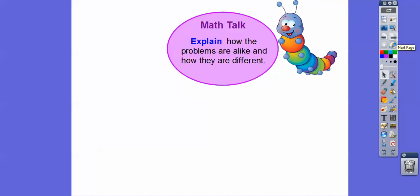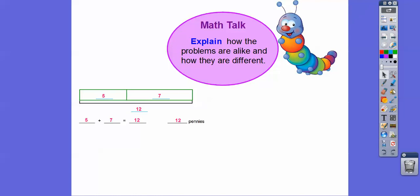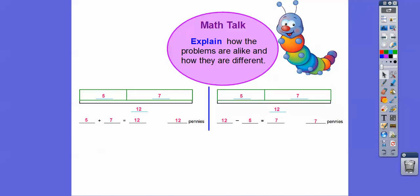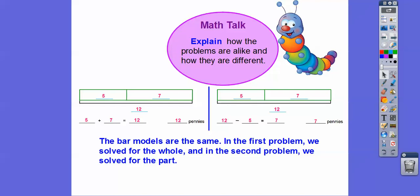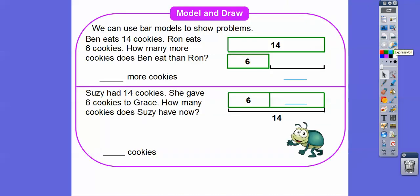So explain how the problems are alike and how they're different. The first one gave us two parts — five and seven — and we added them together to get twelve. This one gave us the twelve, and we didn't know the seven, so we did twelve minus five to get seven. The bar models are the exact same — same parts and wholes. In the first problem we solved for the whole, and in the second we solved for the part. Both have parts five and seven adding to twelve, so twelve minus five or twelve minus seven gives us the other part.